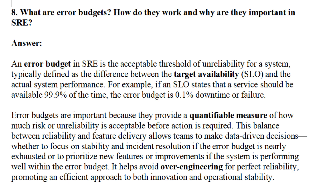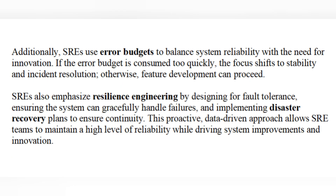Error budgets are important because they provide a quantifiable measure of how much risk or unreliability is acceptable before action is required. This balance between reliability and feature delivery allows teams to make data-driven decisions — whether to focus on stability and incident resolution if the error budget is nearly exhausted, or to prioritize new features or improvements if the system is performing well within the error budget.